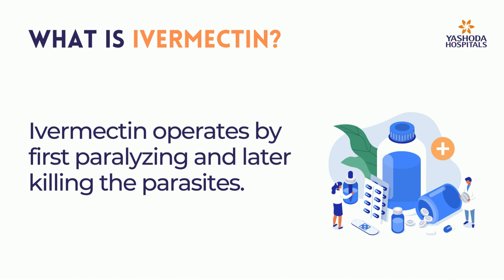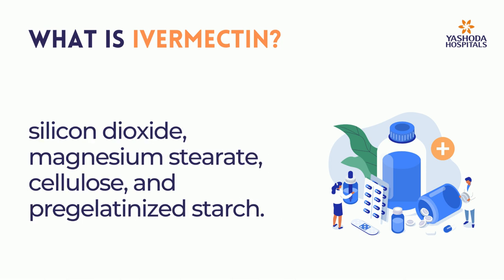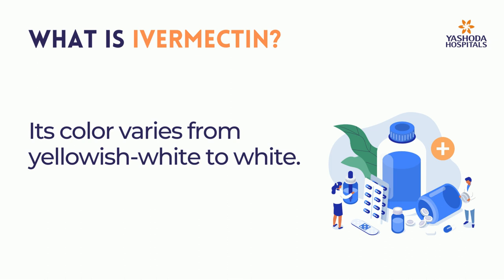Ivermectin operates by first paralyzing and later killing the parasites. Each dose of ivermectin contains 3 mg of ivermectin powder and a few inert materials like silicon dioxide, magnesium stearate, cellulose, and pregelatinized starch. Its color varies from yellowish-white to white.